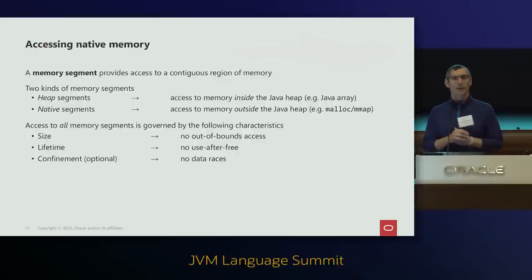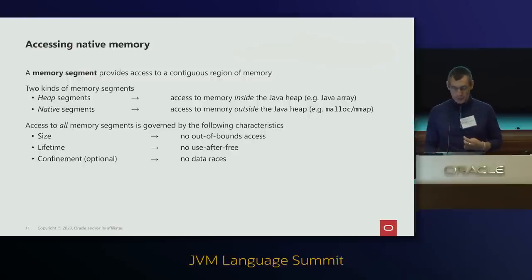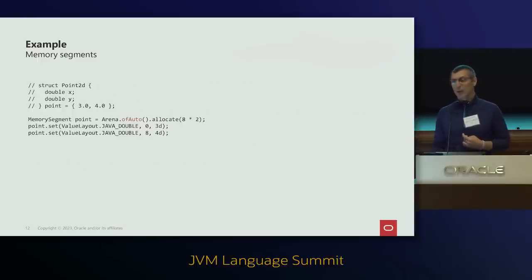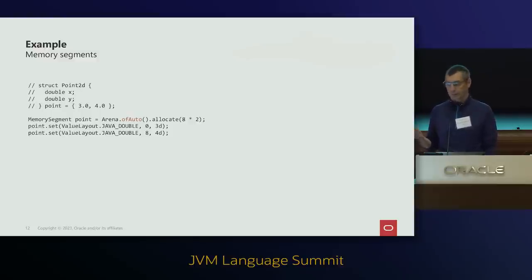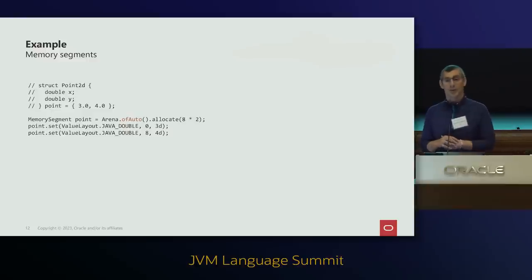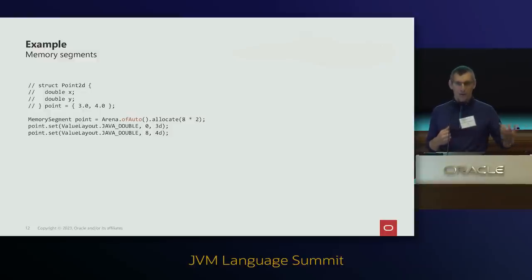You can also attach confinement to segments optionally to avoid data races. Usage is similar to ByteBuffer. For a point2D struct with two double fields X and Y, we allocate a MemorySegment by creating an Arena, then use set methods to write the first 8 bytes to value 3 and the second 8 bytes to value 4. If we try to access offset 16 — reading 8 bytes starting at offset 16 — that's out of bounds and we get an exception.